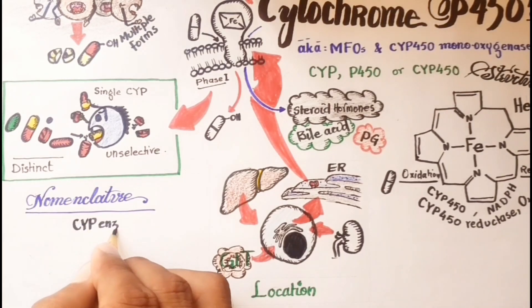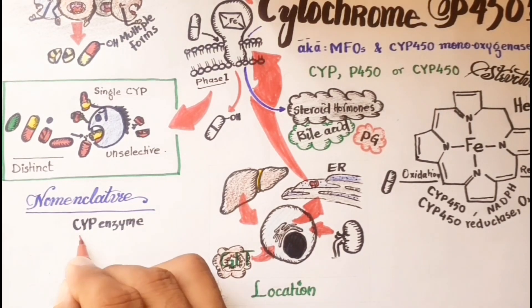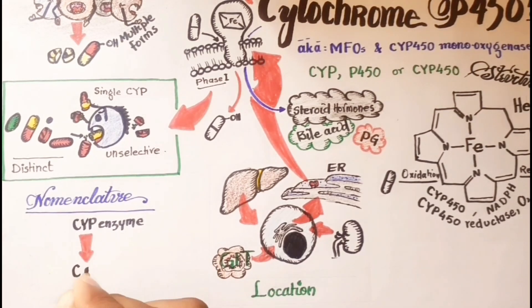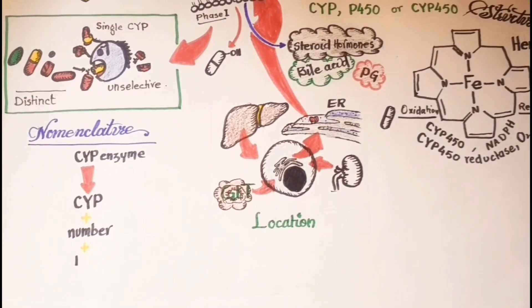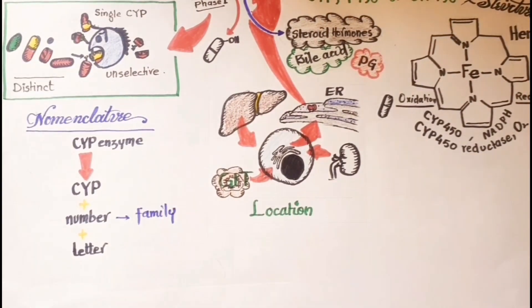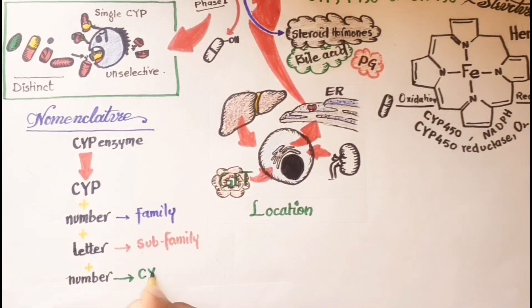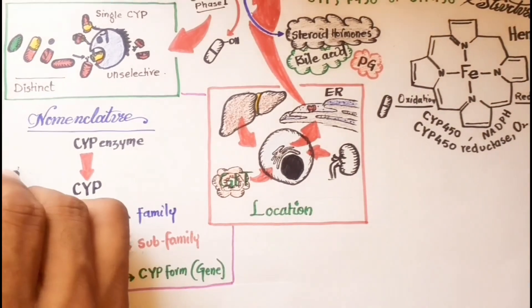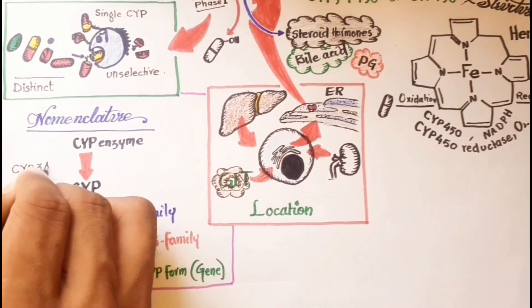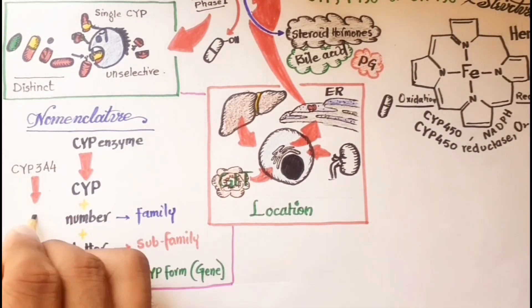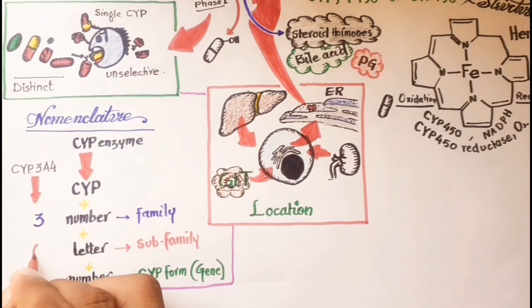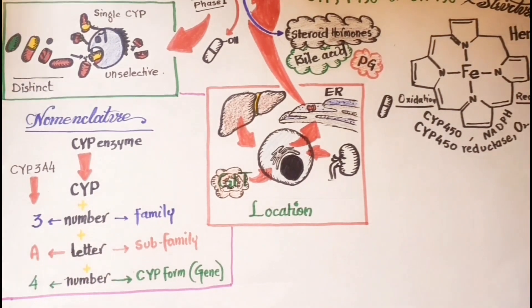Endoplasmic reticulum CYPs are named with the root CYP followed by a number denoting the family, a letter denoting the subfamily, and another number naming the CYP form. Thus, CYP3A4 is family 3, subfamily A, and gene number 4.